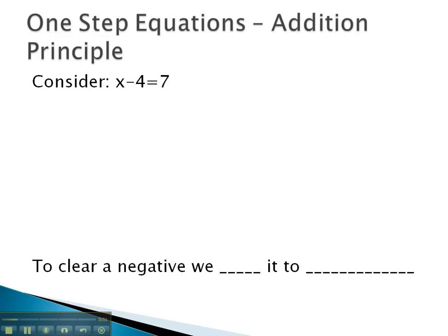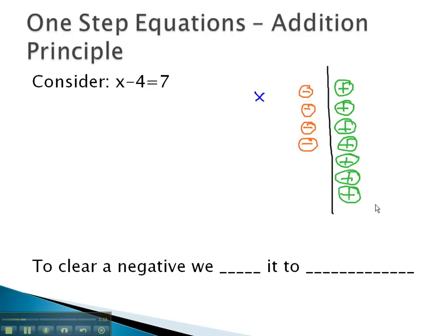On one side, we've got this x, but we also have these four negatives. One, two, three, four negatives. And on the other side of the equal sign, on the other side of the equation, we have seven positives. One, two, three, four, five, six, seven positives.